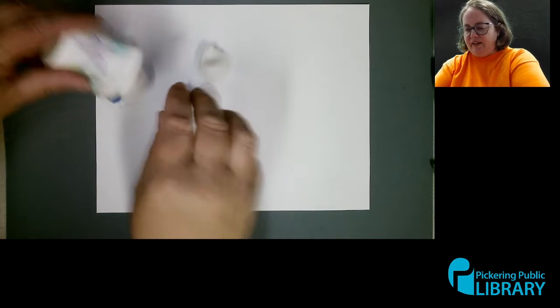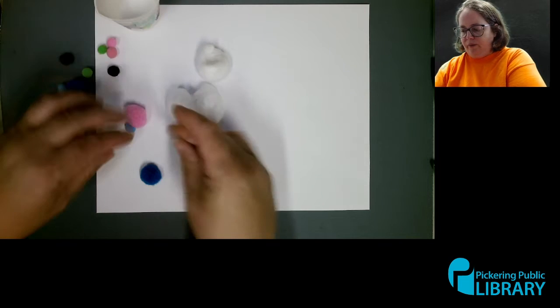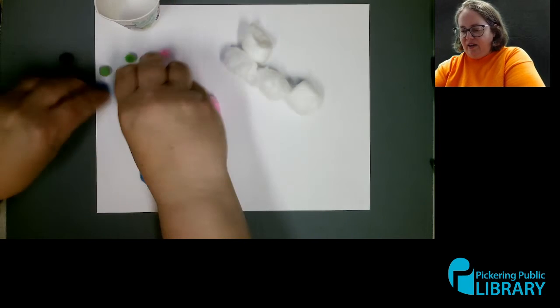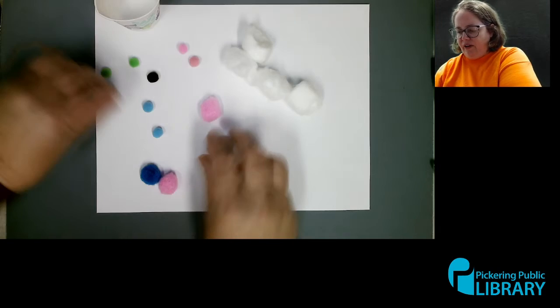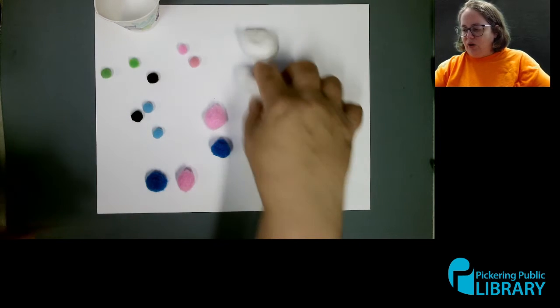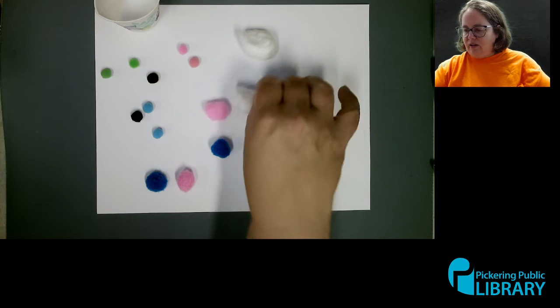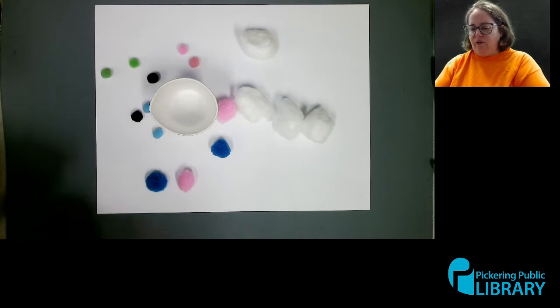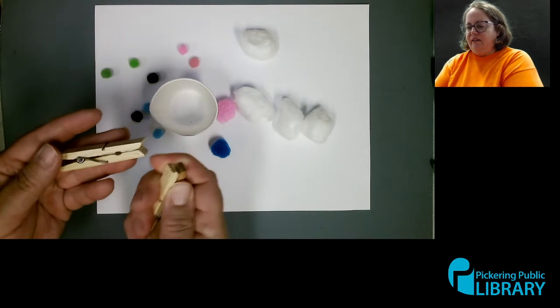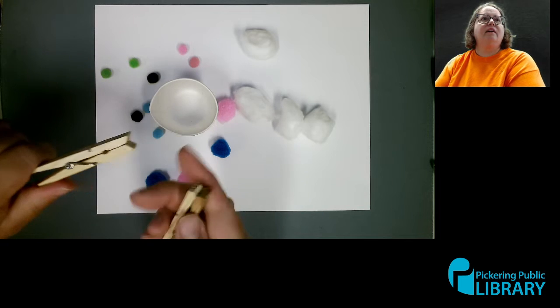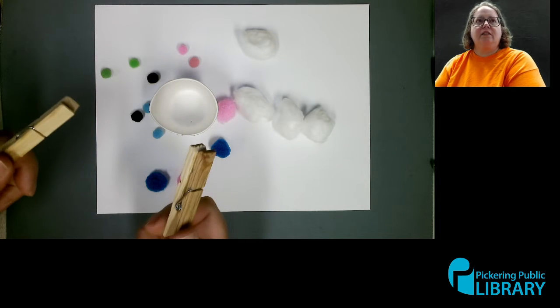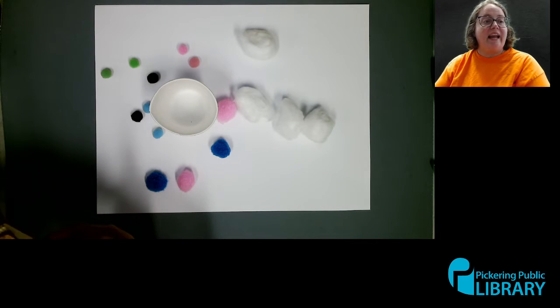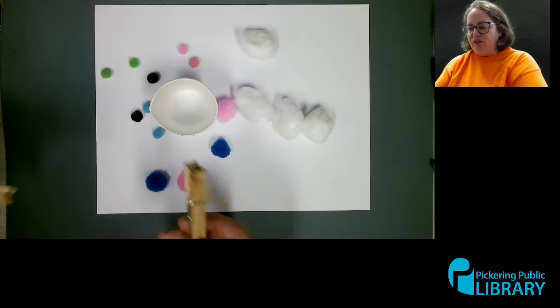One of the things I have is, depending on what you have at home, I have cotton balls here. And the other thing we're looking for is clothespins. And I also have pom-poms depending on your child's age and how well they can do.